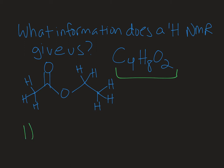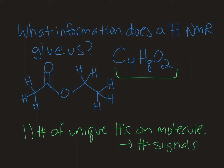First, the proton NMR tells us about the number of unique protons on that molecule. What I mean by that is the number of protons that are in different chemical environments. And the way that we see this is through the number of signals that we observe on our proton NMR. So if I have four unique types of protons, I'll see four signals. If I have three unique types of protons, I would see three signals.